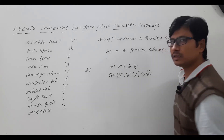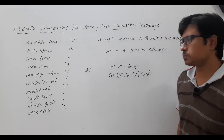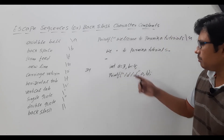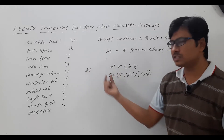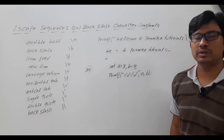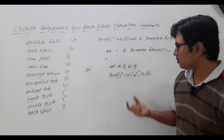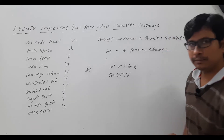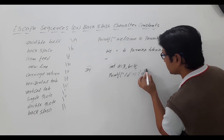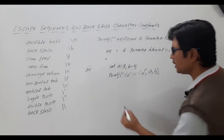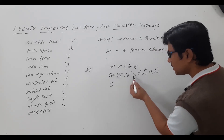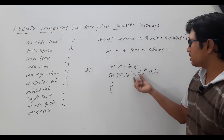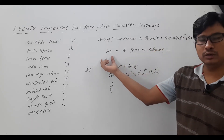Beginners often wonder why their output shows 34 instead of 3 and 4 separately. If you want the output in a proper way, you can write printf("%d\n%d", a, b). Then the value 3 will be printed, the cursor goes to the new line, and then 4 is printed on the next line. This is the use of backslash N — after printing, it moves the cursor to the new line.